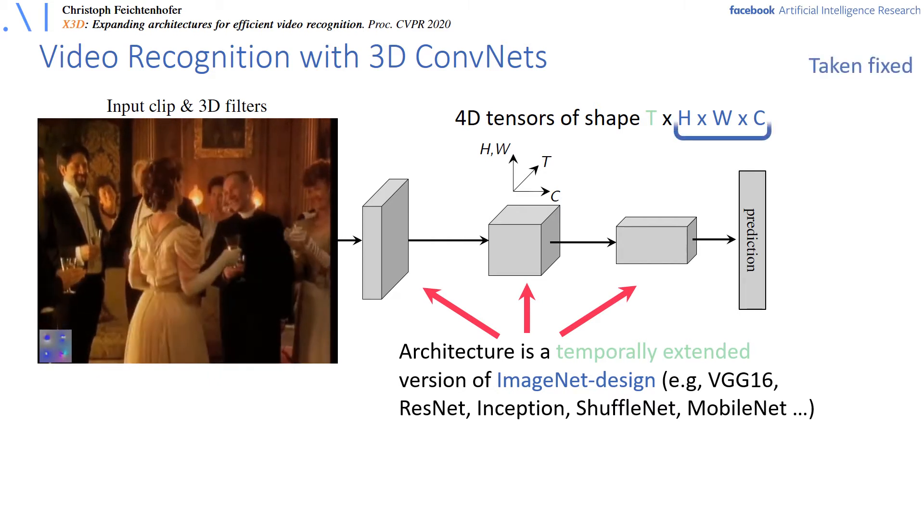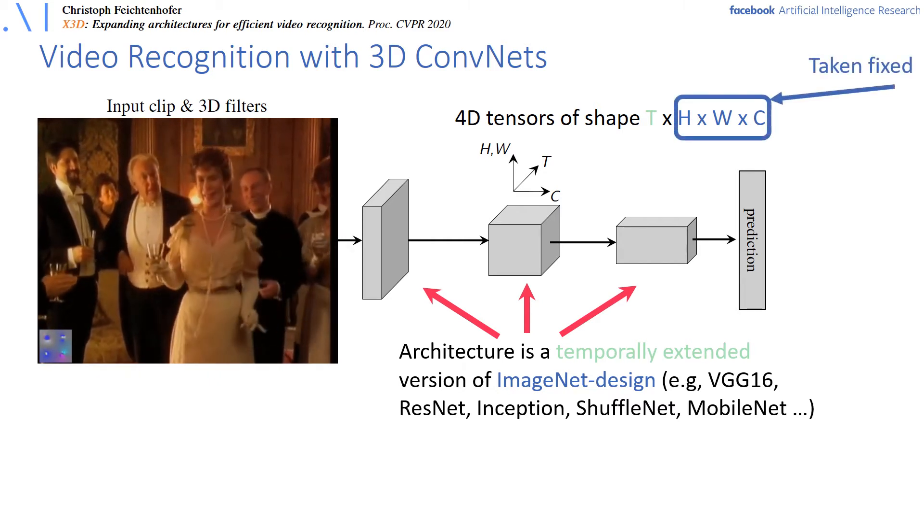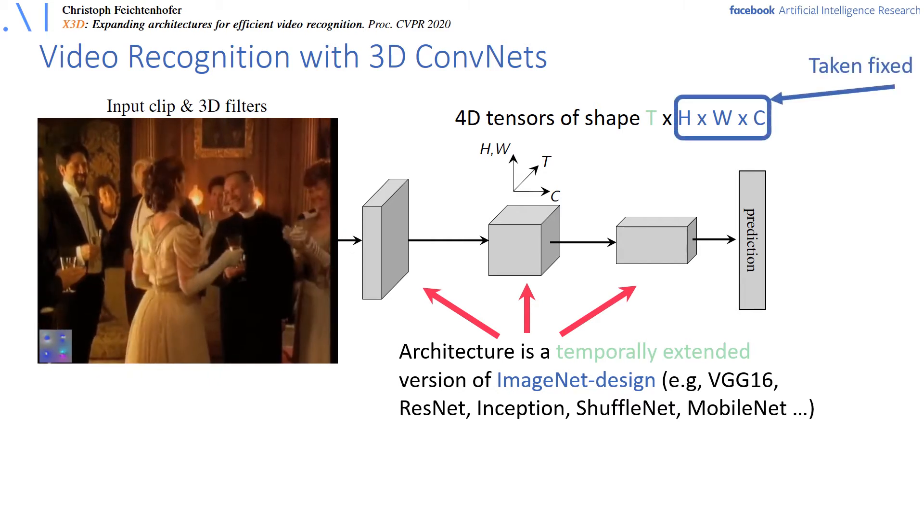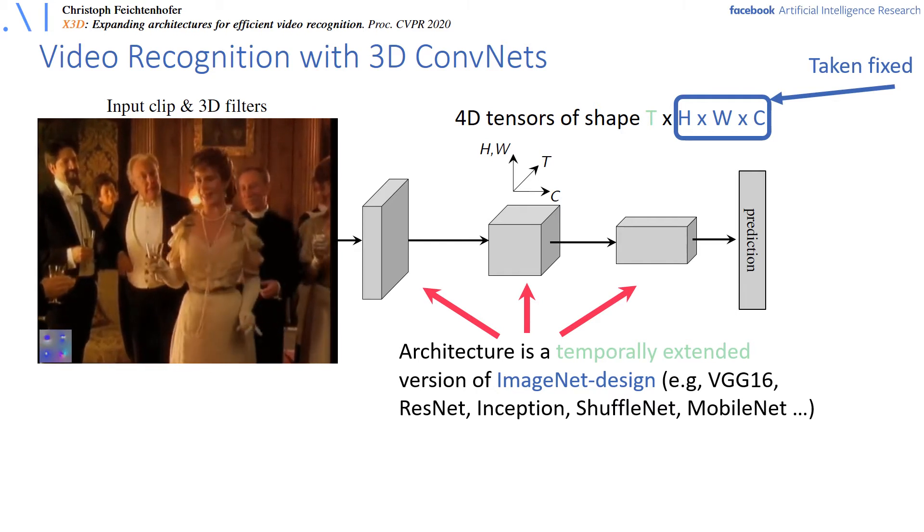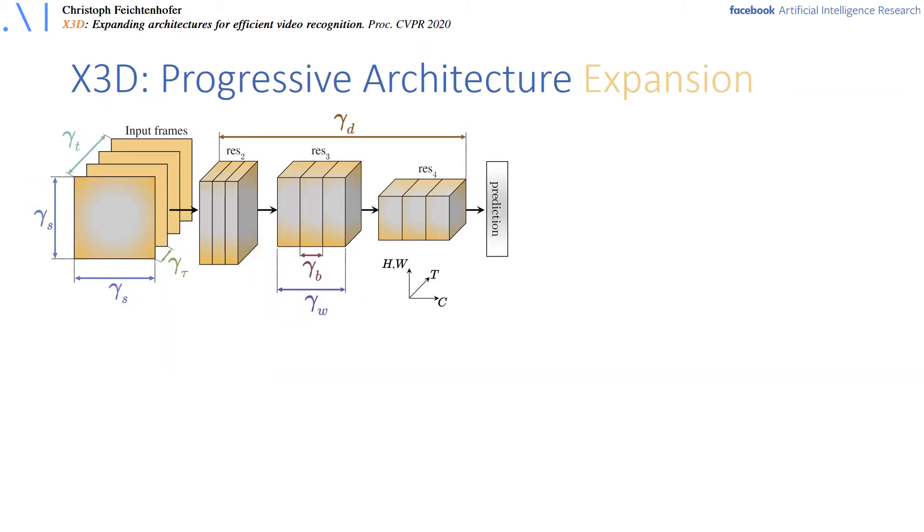Therefore, the h times w times c dimensions are fixed based on the ImageNet design. Our claim in this work is that direct temporal expansion is suboptimal for efficient video recognition.